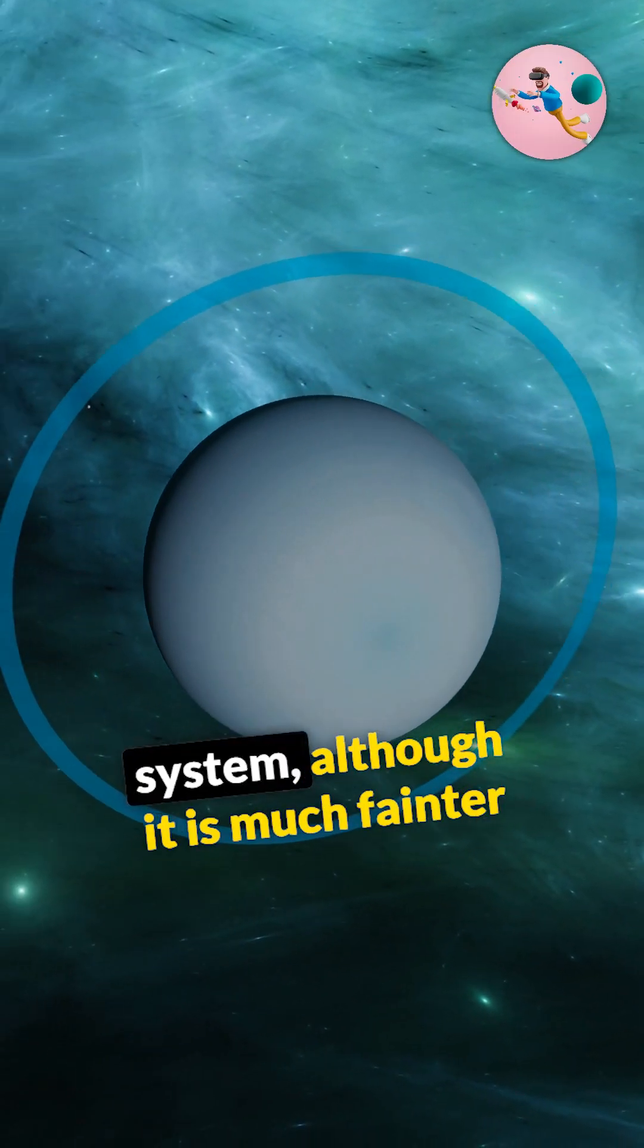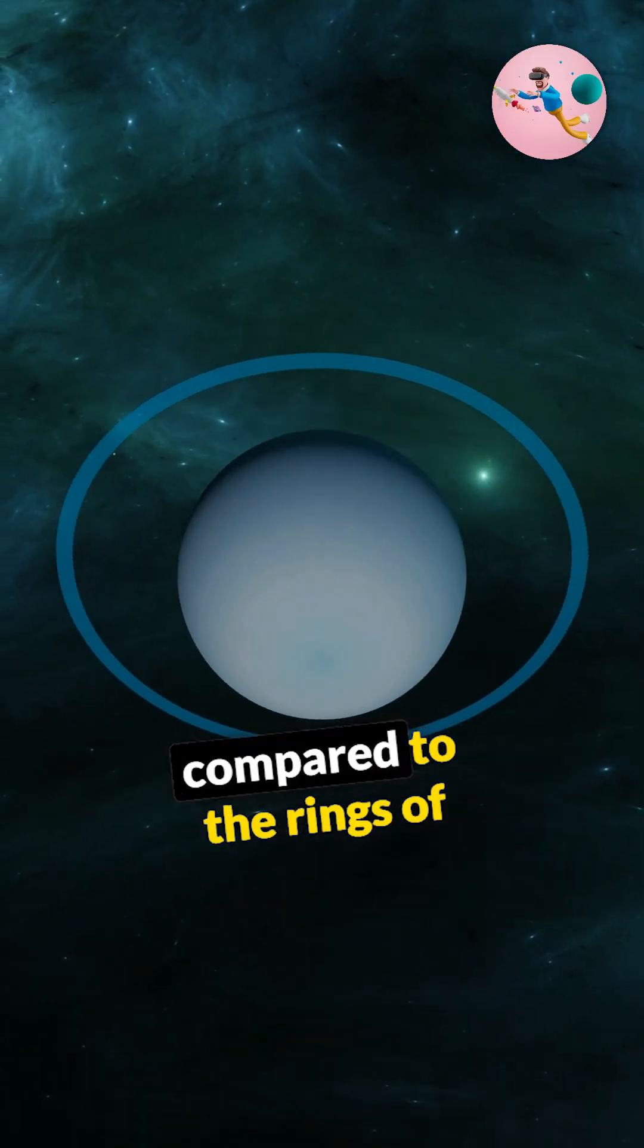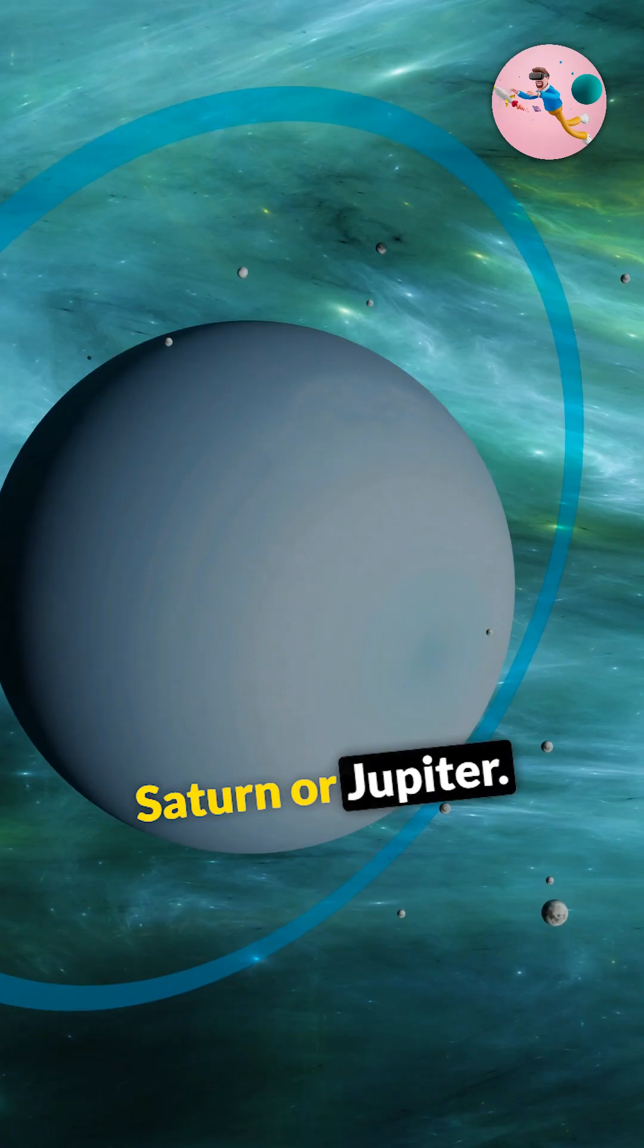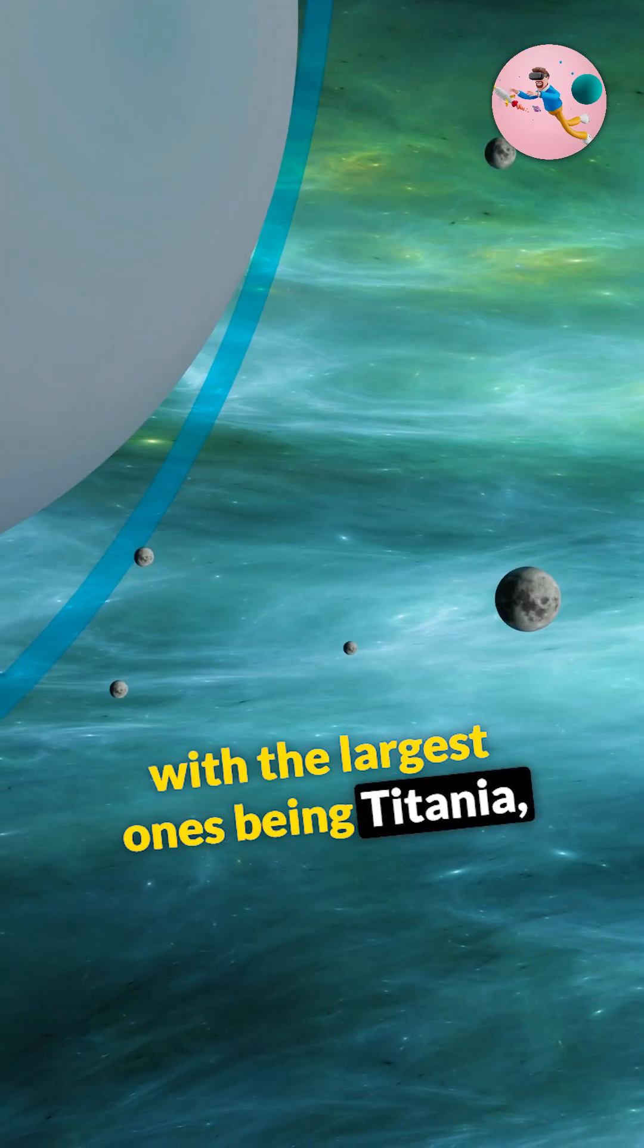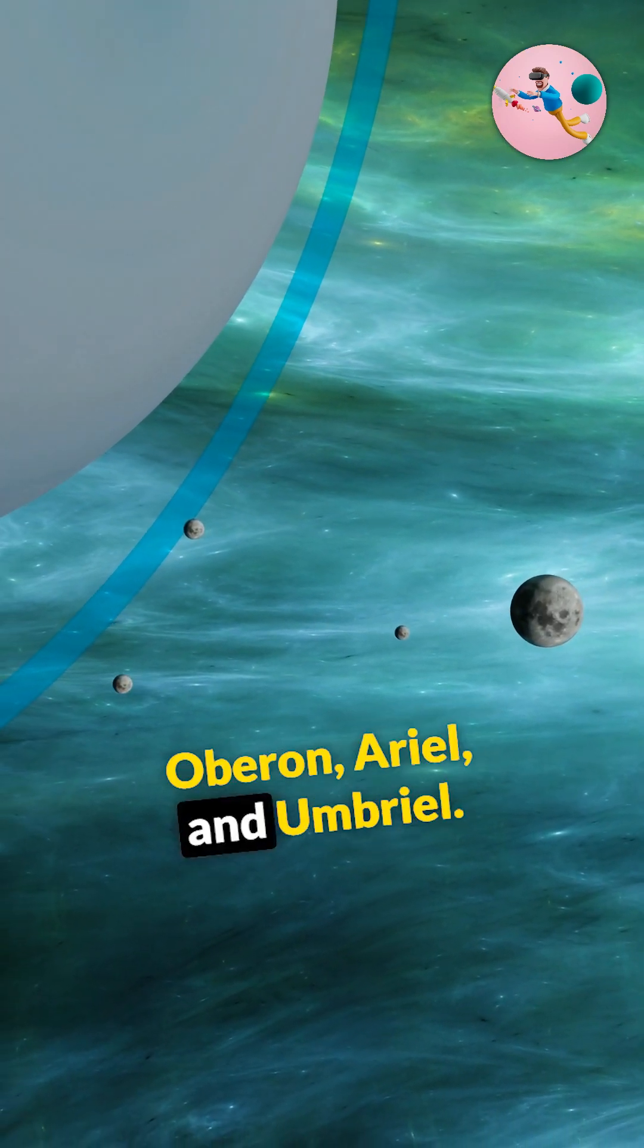Uranus also possesses a ring system, although it is much fainter compared to the rings of Saturn or Jupiter. The planet has 27 known moons, with the largest ones being Titania, Obron, Ariel, and Umbriel.